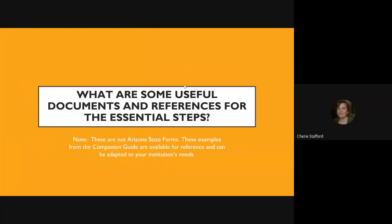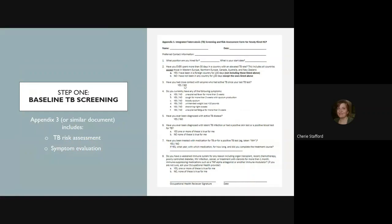There are useful documents and references for these essential steps — I'll be sharing some forms. These examples come directly from the companion guide and are available for your reference; they can be adapted to your institution's needs. Step one is baseline TB screening, which is basically a TB risk assessment and symptom evaluation. An example form is the PINDEX-3, though you can use your own document as well.